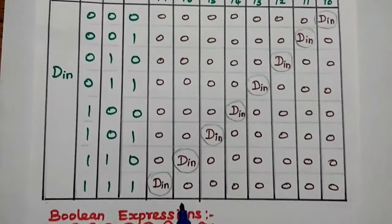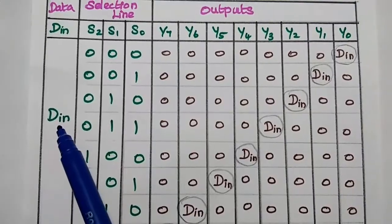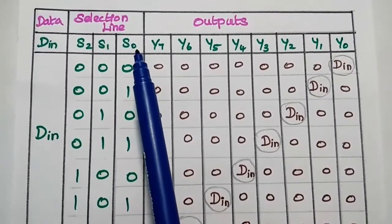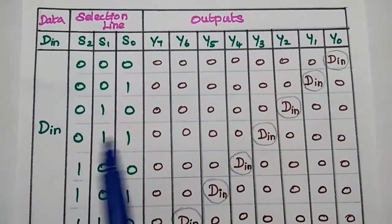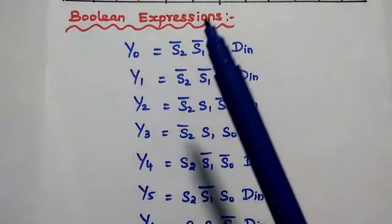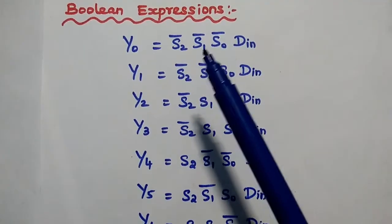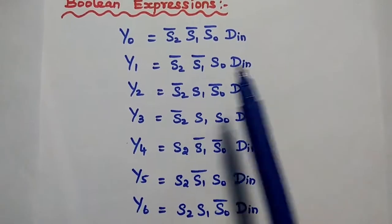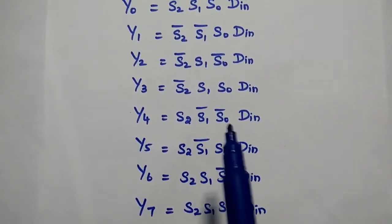The boolean expression for each output is as follows. Y0 = DIN · S2̄ · S1̄ · S0̄. When all 3 selection lines are 0, we select Y0. Y1 = DIN · S2̄ · S1̄ · S0. Y2 = DIN · S2̄ · S1 · S0̄. Likewise, we can derive all the possible boolean expressions for each of the 8 output lines.